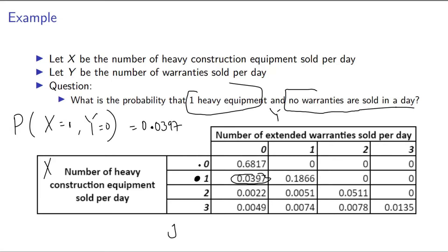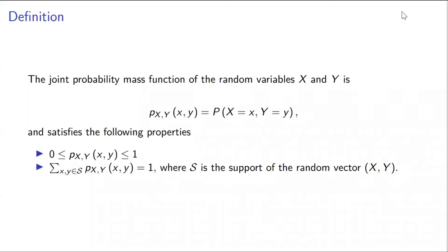Again, this table represents the joint probability mass function of these two random variables X and Y. Each of these probabilities is between zero and one, and if you sum all these joint probabilities, you should get a value of one. What we have done so far is introduce the joint PMF, gave an example, defined it formally, and gave another example. Now let me give you an exercise that will lead us into what we will discuss in the next video.